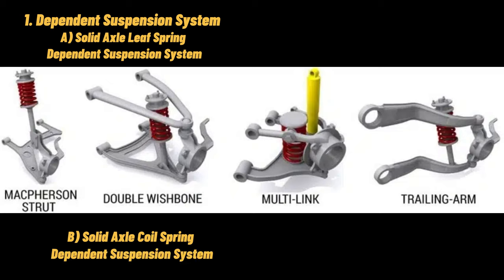B. Solid Axle Coil Spring Dependent Suspension System. In this type, the coil springs are seated on pan-shaped brackets that are attached to the rear axle. Torque tube drives are also attached to this setup, and the coil springs are not subjected to the driving thrust. The shock absorbers present here prevent the vehicle from rolling, and the energy stored in the coil springs is greater than that stored in the leaf springs.